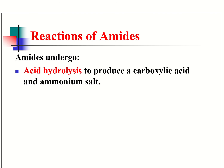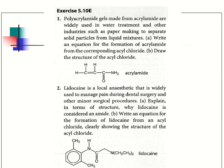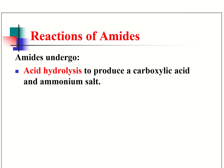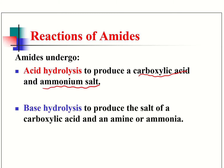There are also a few similar questions in your class notes. For reactions of amides, you need to know about acid and alkaline hydrolysis. Amides will undergo acid hydrolysis and produce the original carboxylic acid and ammonium salt. With base hydrolysis, they will produce the salt of the carboxylic acid and ammonia.